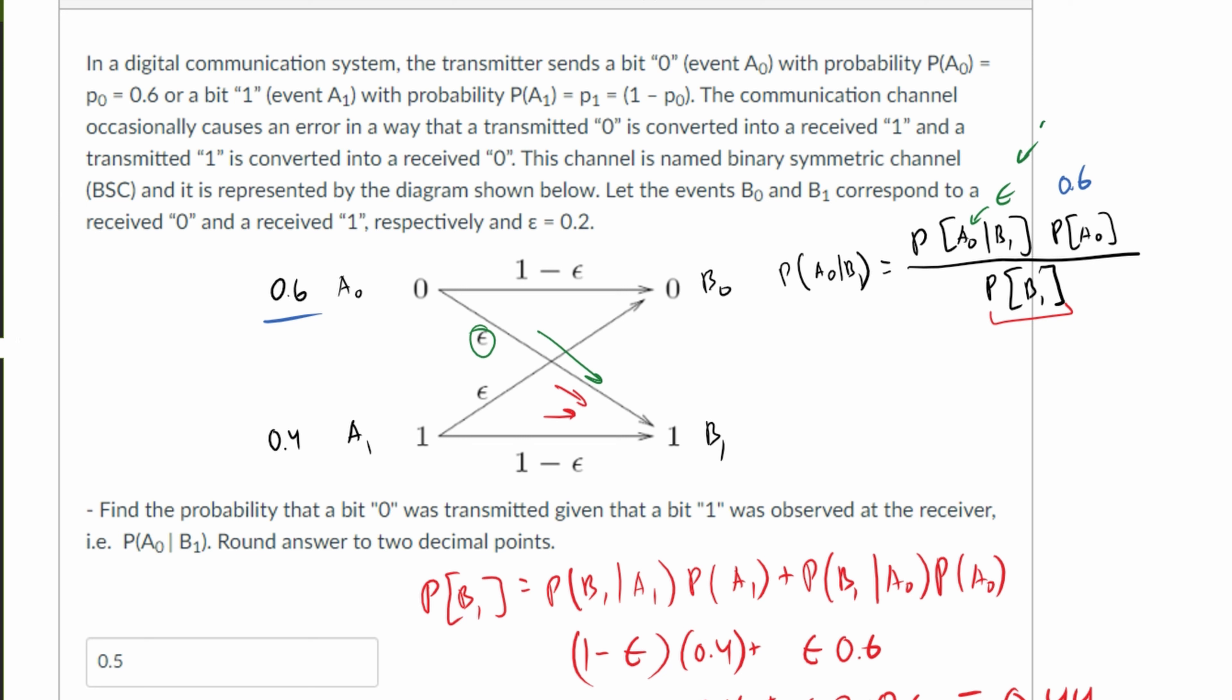Remember, this ε is going to be 0.2. So we're going to have 0.2 times 0.6 divided by 0.44. That's going to leave us with 0.273. And that's how we would go about solving this problem.